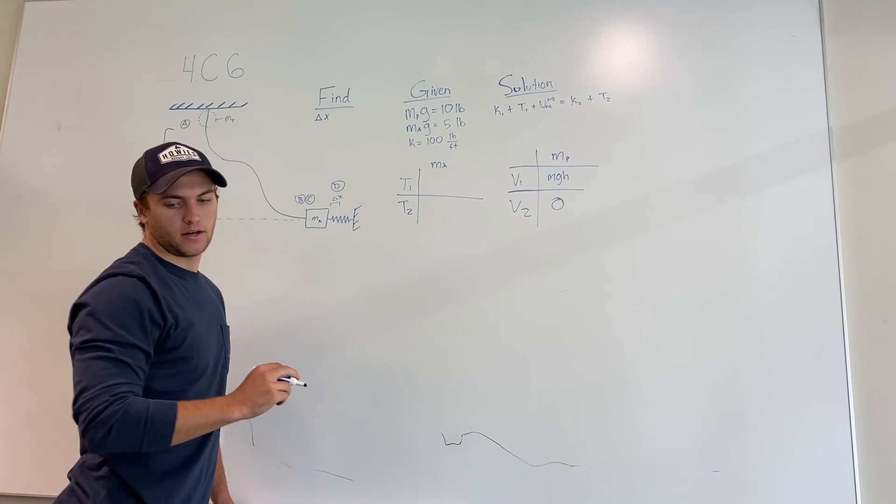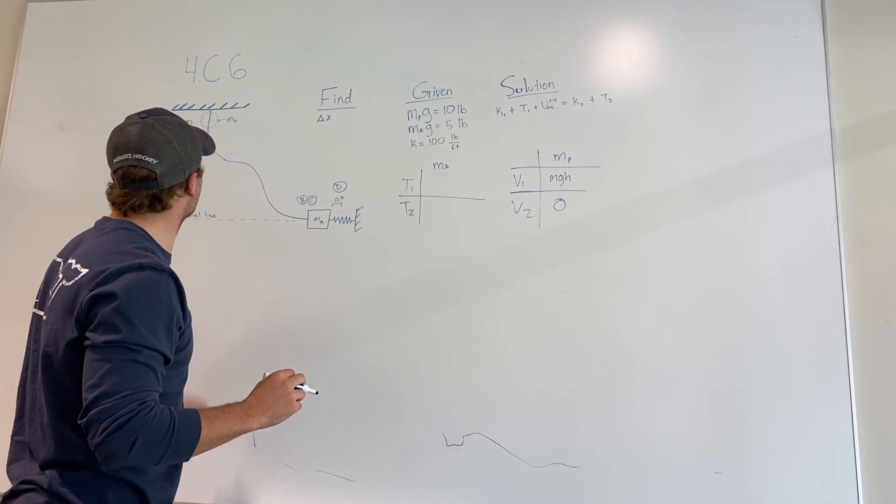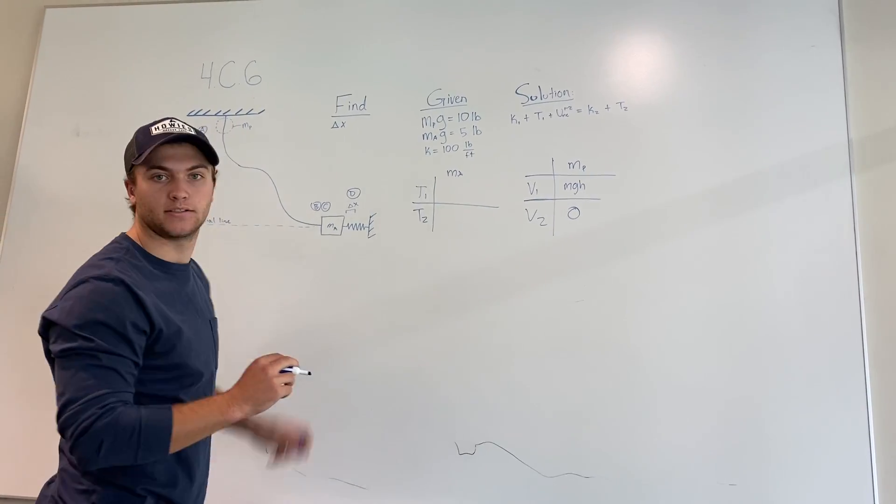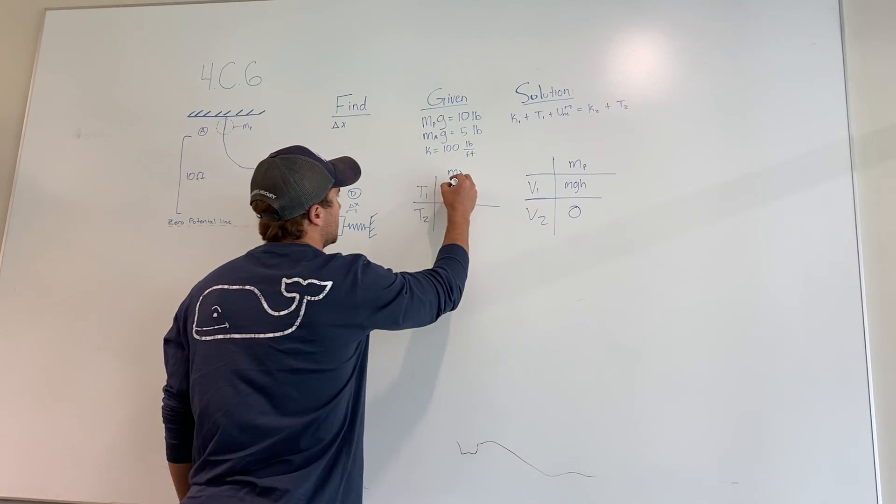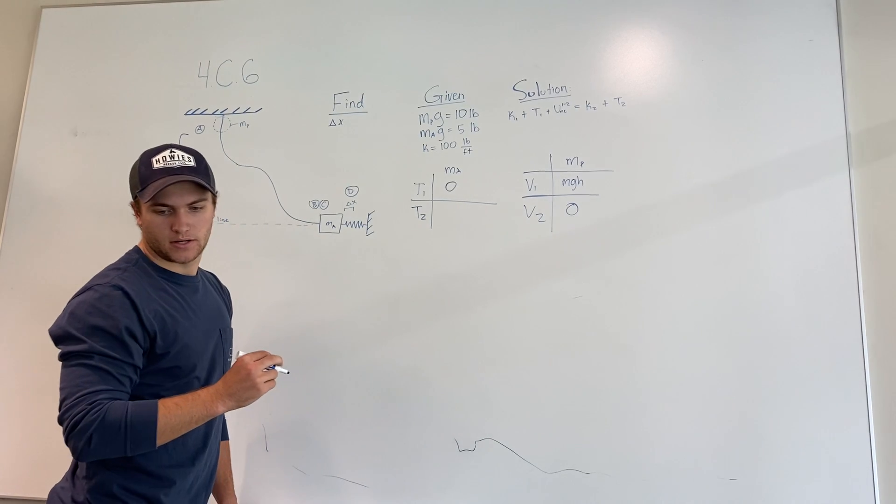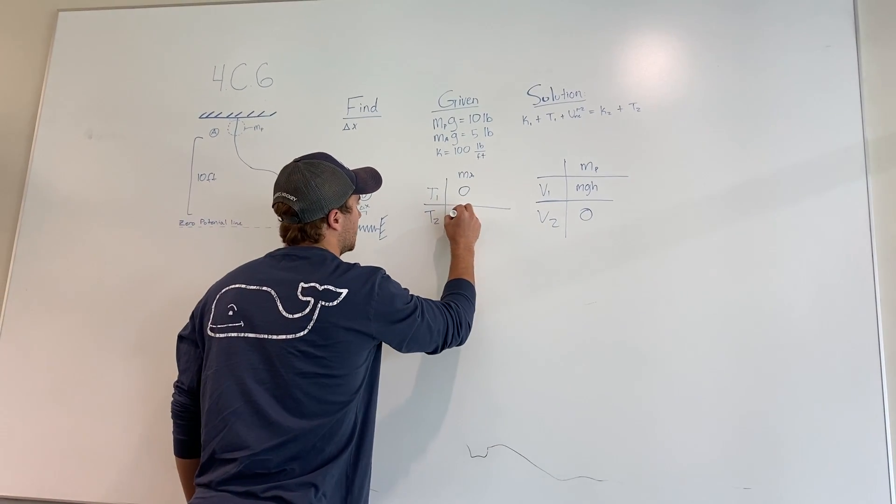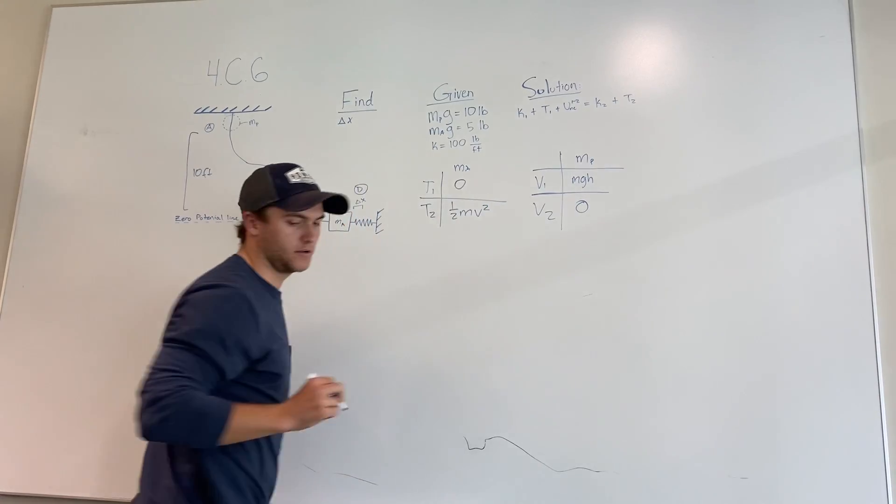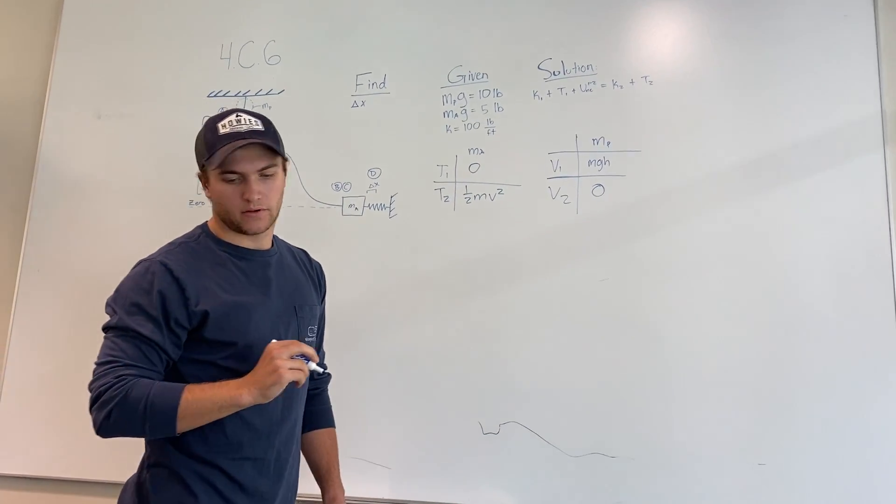The kinetic at 1, it is dropped from at rest, it says in the problem. So the kinetic at 1 is zero. And then the T2 is one half M V squared.